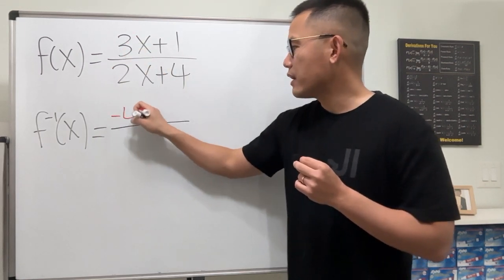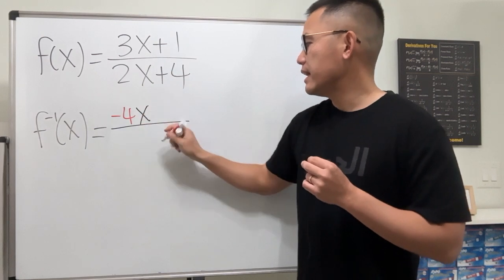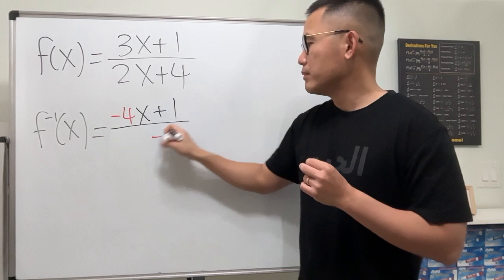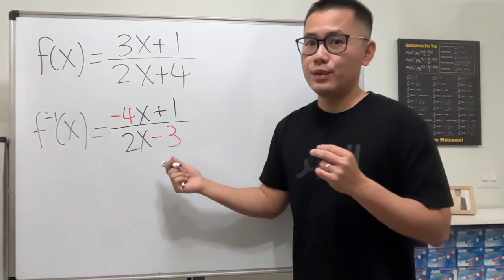So you have negative 4 here with the x, and then minus 3 here. And then just keep that and that the same. So plus 1 and 2x, and we're done.